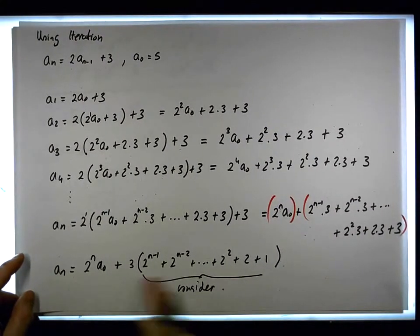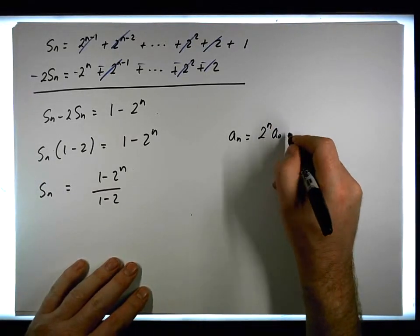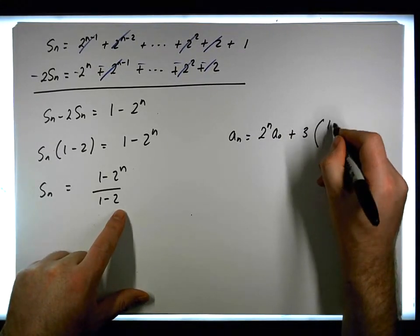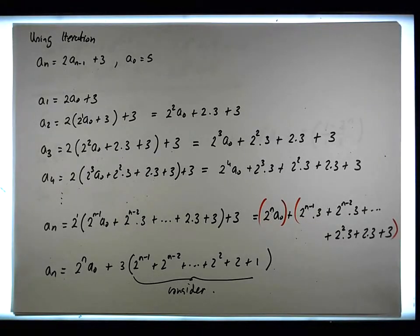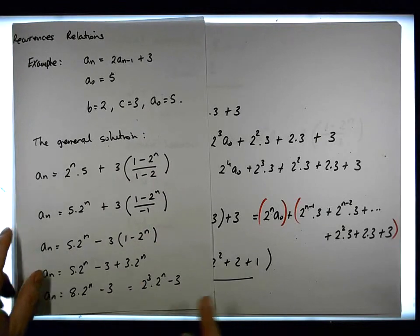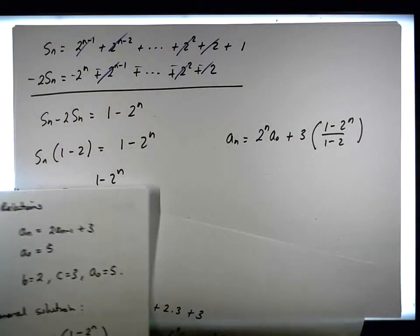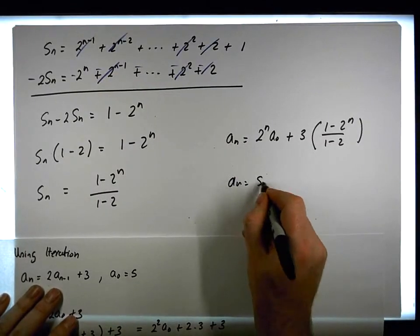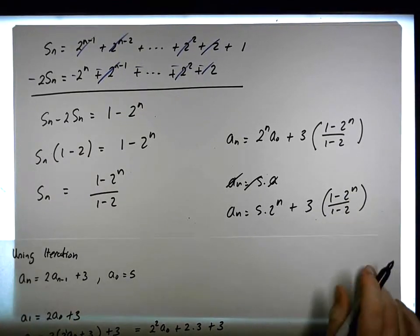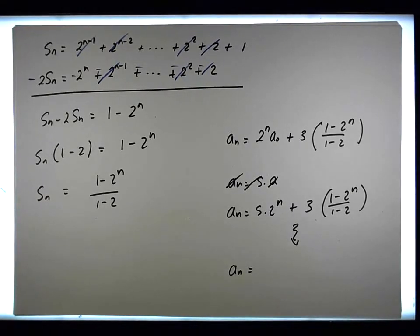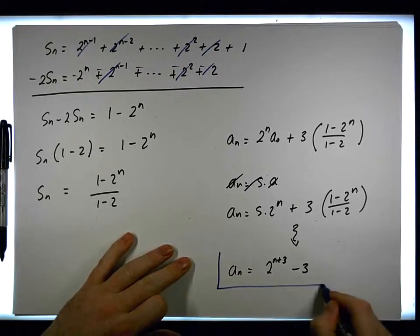Our solution now becomes: a_n = 2^n·a_0 plus 3 times (1 minus 2^n) / (1 minus 2). Plugging in a_0 = 5, we get a_n = 5 times 2^n plus 3 times (1 minus 2^n) / (1 minus 2). Simplifying, we end up with a_n = 2^n + 3 minus 3.